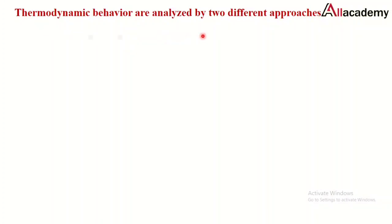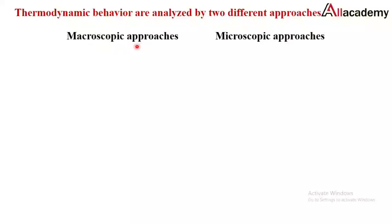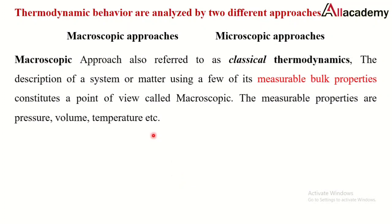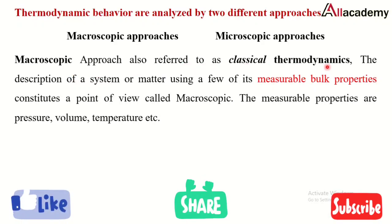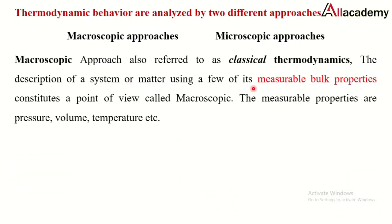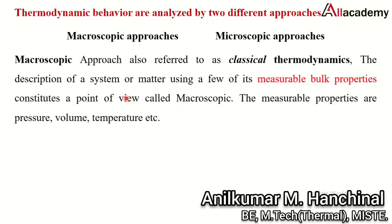Thermodynamic behavior is analyzed by two approaches: the macroscopic approach and the microscopic approach. The macroscopic approach, also referred to as classical thermodynamics, describes a system using a few constant measurable bulk properties — such as pressure, volume, and temperature. If a system is analyzed using a few measurable properties, that approach is called the macroscopic approach.